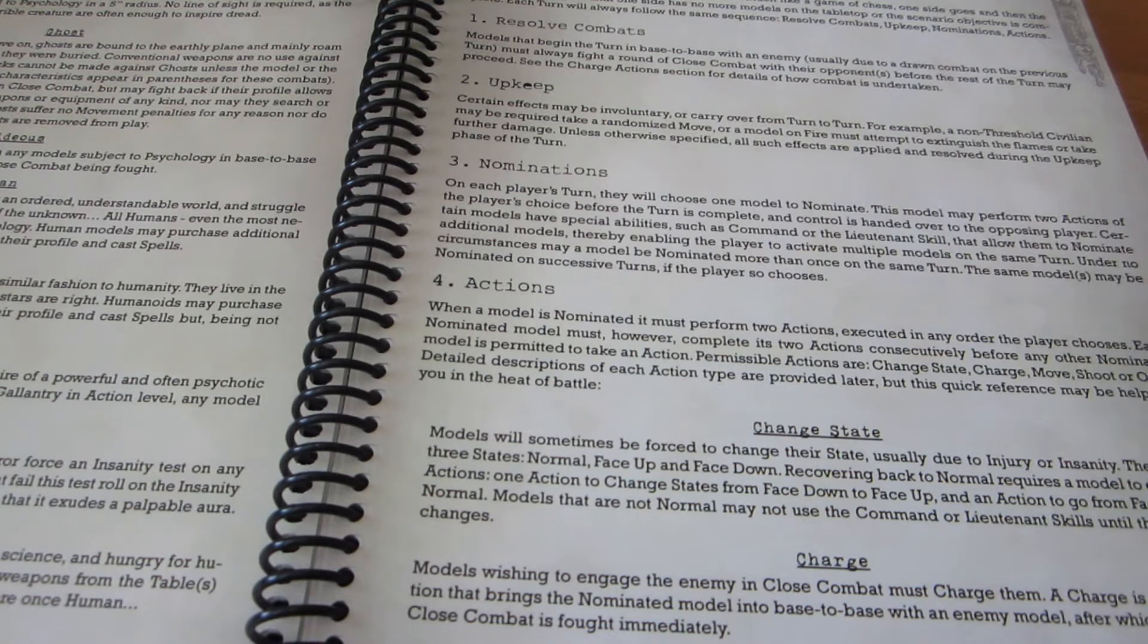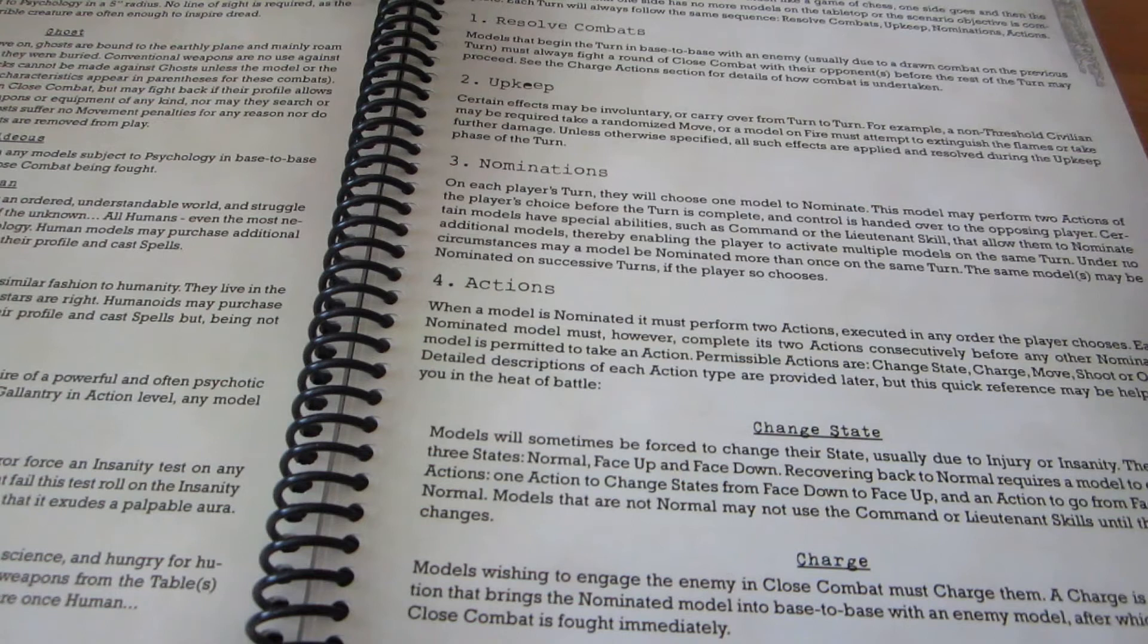However, if you nominate a model that has the command ability, it can nominate two others. And if it has, I think it's called improved command, it can nominate, I think, three others. So, you also, at least at the beginning stages of a campaign, it is quite possible that you only have three models on a side. Threshold player will very likely start with only three models. So if one of those has command, well, then you do get to go with all of them in every turn.